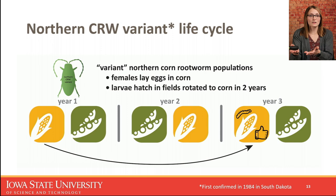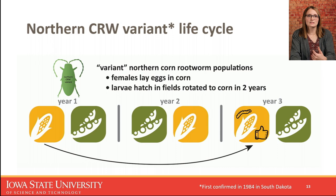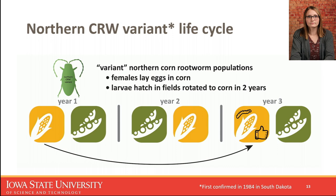Essentially they're trying to ensure the eggs will hatch and larvae will be feeding in a corn field. This isn't necessarily a new thing — it was first confirmed in 1984 in South Dakota, and there is literature dating back to the 1930s talking about a very similar phenomenon, though they didn't know the mechanism. It wasn't until 1984 that researchers figured out it was likely this extended diapause mechanism for northern corn rootworms.